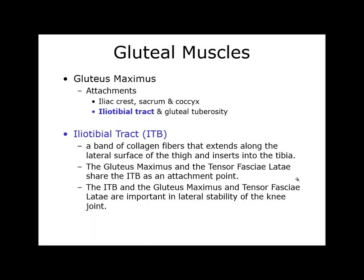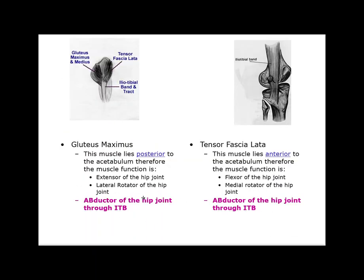The gluteus maximus and the tensor fasciae latae share the IT band as an attachment point and they stabilize the knee on the lateral side. The gluteus maximus is posterior, so it is an extensor and lateral rotator of the hip, and it abducts the hip through the IT band. The TFL lies anterior to the acetabulum, so it's a flexor of the hip, a medial rotator, and an abductor through the IT band attachment.